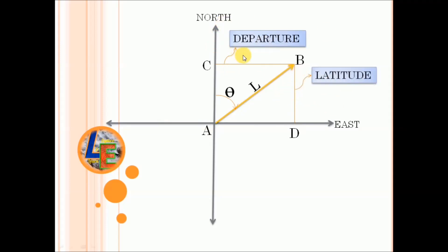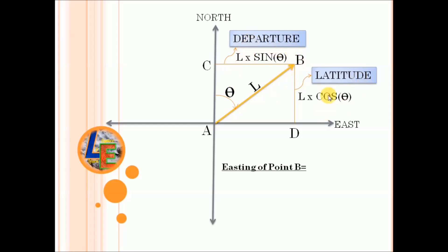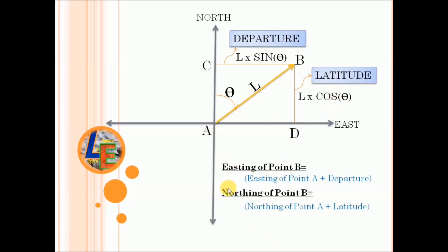The departure is calculated by L sin θ and the latitude is calculated by L cos θ. So if you know the coordinate of point A, you can get the easting and northing of point B by adding departure and latitude. The easting of point B equals easting of A plus L sin θ, and the northing of point B equals northing of A plus L cos θ. That gives you the coordinate of B.